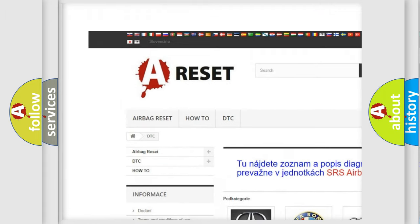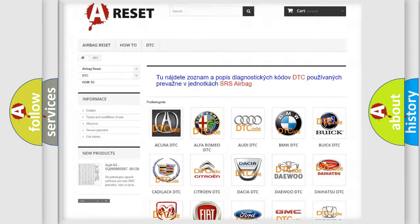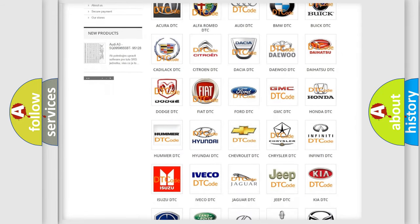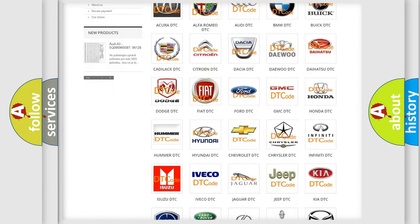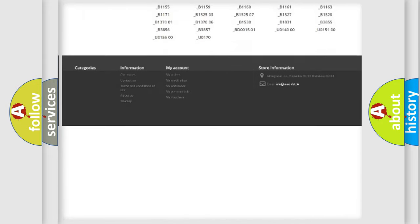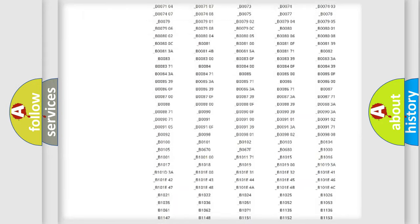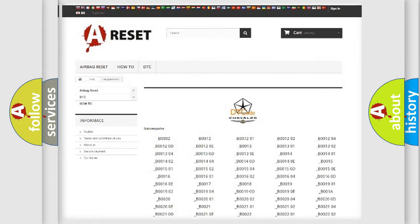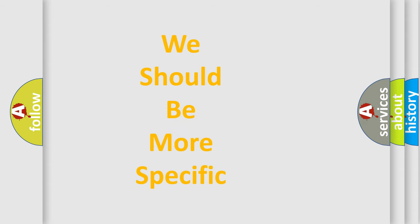Our website airbagreset.sk produces useful videos for you. You do not have to go through the OBD2 protocol anymore to know how to troubleshoot any car breakdown. You will find all the diagnostic codes that can be diagnosed in Chrysler vehicles and many other useful things.